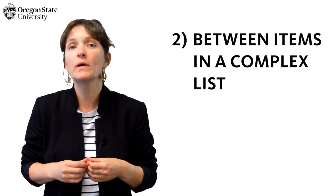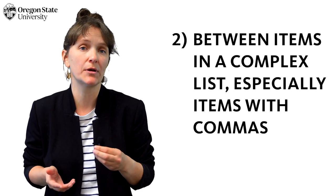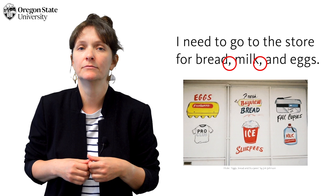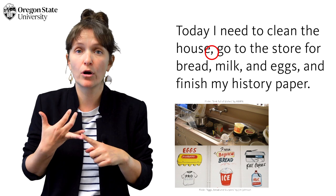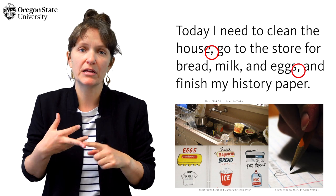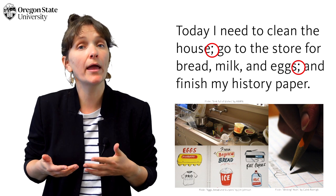Usage number two: the other way to use semicolons is between items in a complex list, especially if any item on the list contains its own commas. In a simple list, we separate items with commas — for example, 'I need to go to the store for bread, milk, and eggs.' However, if an item on the list contains commas within it, then just using commas to separate the list items would be confusing. Instead, we use semicolons: 'Today I need to clean the house; go to the store for bread, milk, and eggs; and finish my history paper.'